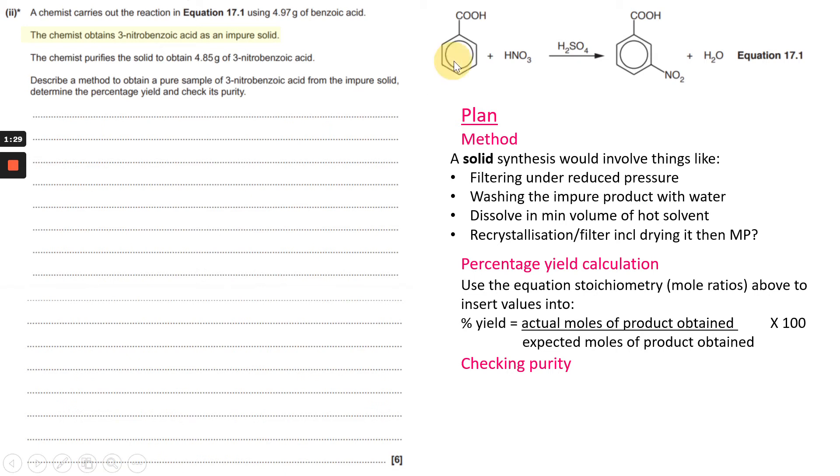So that would mean the mole ratios between your benzoic acid and your three nitrobenzoic acid, to put the values into the actual moles over the expected moles times a hundred.